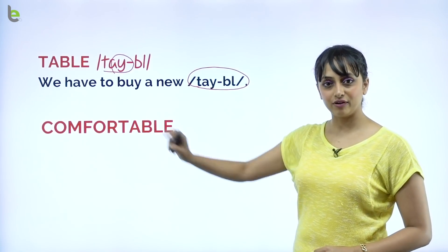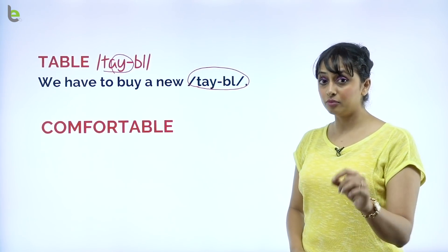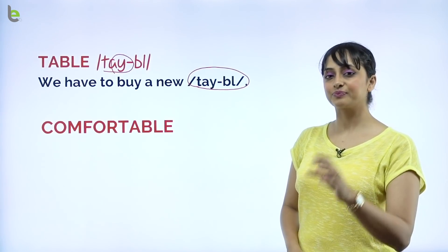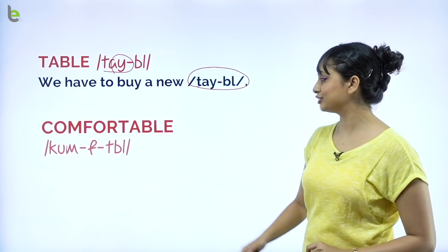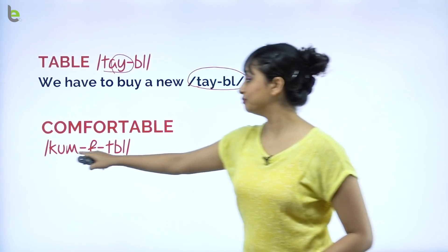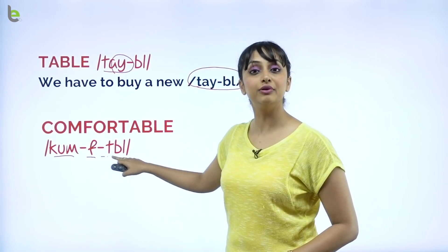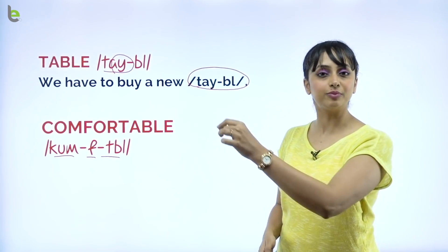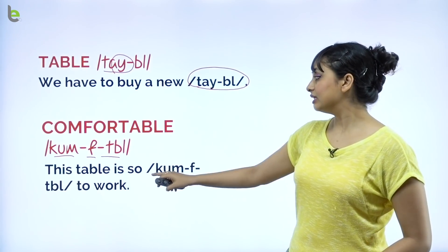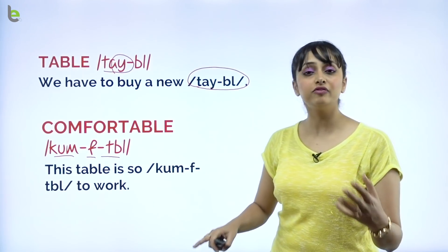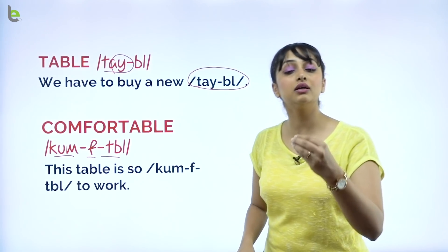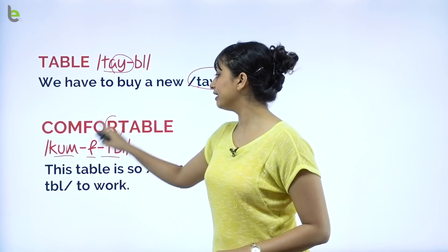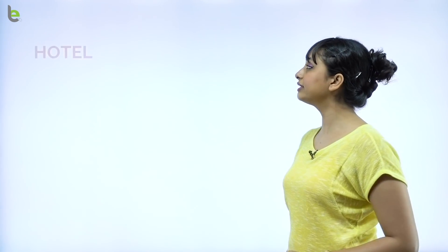This word — tell me, how is it pronounced? Comfortable. The correct pronunciation is 'comf-table.' Comf-table. Remember: comf-table — not 'comfortable' with the 'or' sound. There is no R sound. Comf-table. That's right guys.